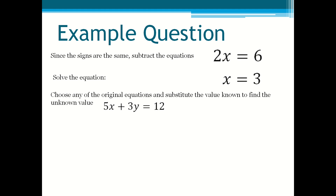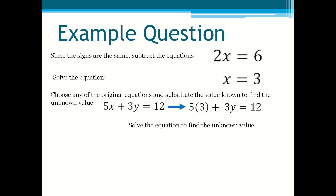I'll use 5x + 3y = 12. So you substitute 3 into the place of x: 5 times 3 plus 3y = 12. Then you solve the equation to find what y is equal to. So 15 + 3y = 12. You subtract 15 from both sides to get 3y = −3. Then you divide both sides by 3 to find y, and y = −1.